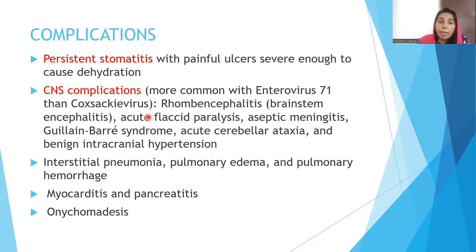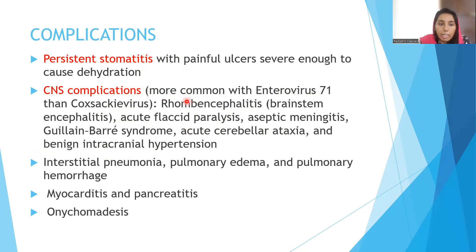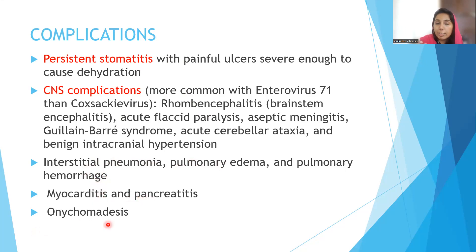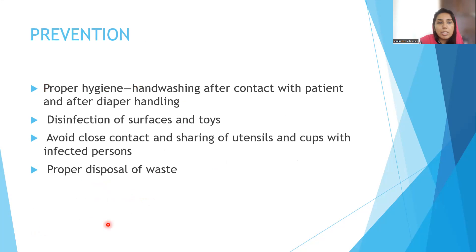Complications include persistent stomatitis with painful ulcers. CNS complications are more common with enterovirus 71 than coxsackievirus, including rhombencephalitis, acute flaccid paralysis, aseptic meningitis, Guillain-Barré syndrome, acute cerebellar ataxia, and benign intracranial hypertension. Lung complications include interstitial pneumonia, pulmonary edema, and pulmonary hemorrhage. Cardiac complication is myocarditis. Pancreatitis is seen rarely. Onychomadesis — nail shedding — is another known complication.